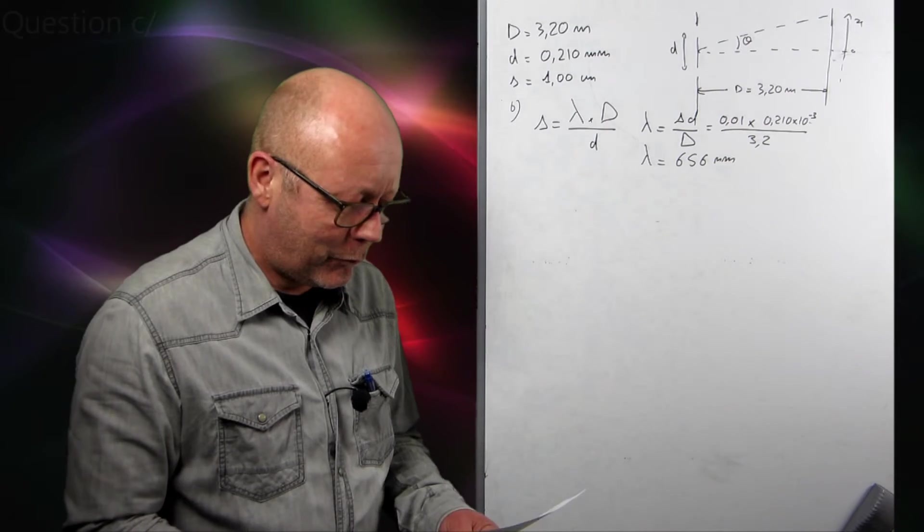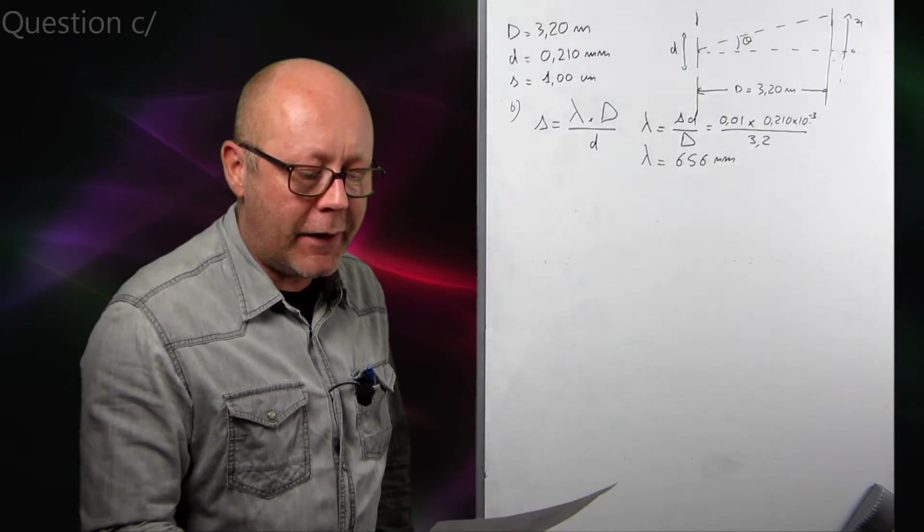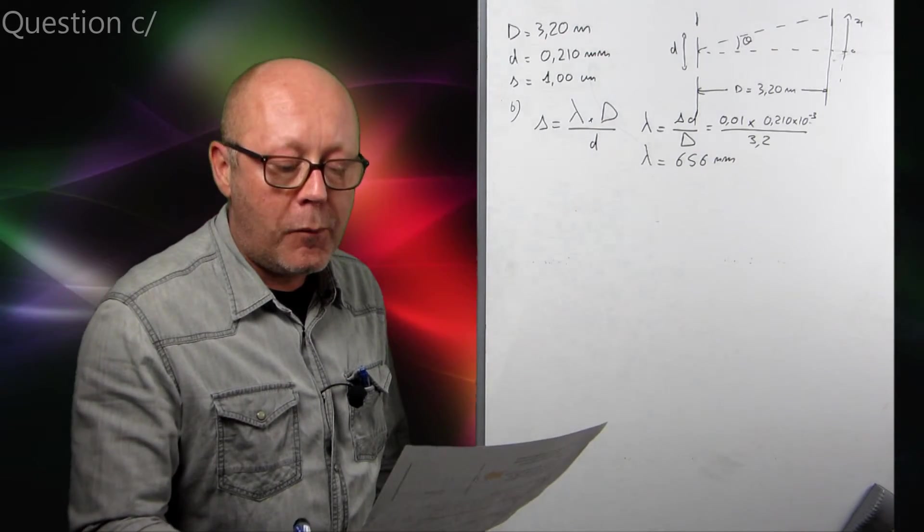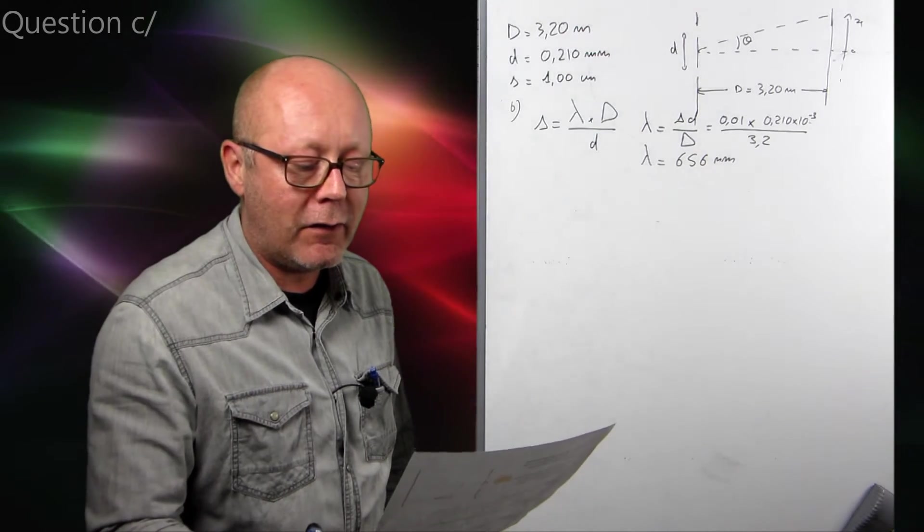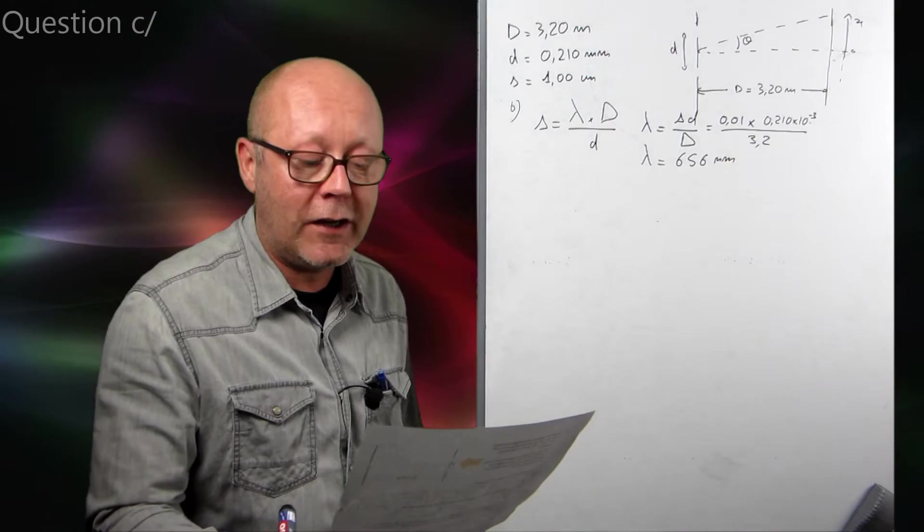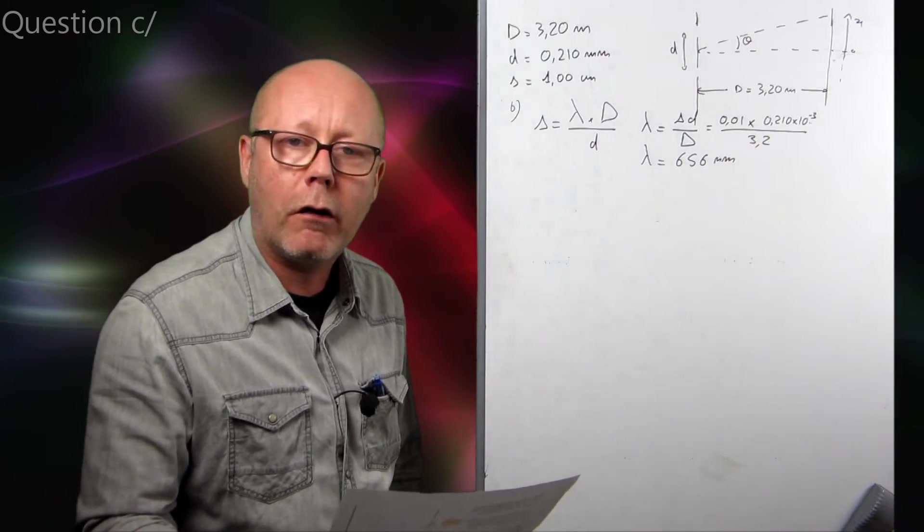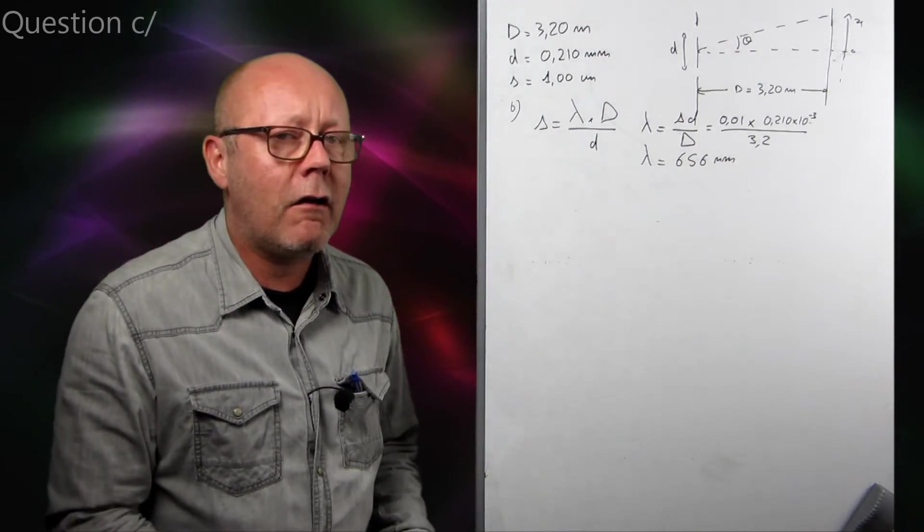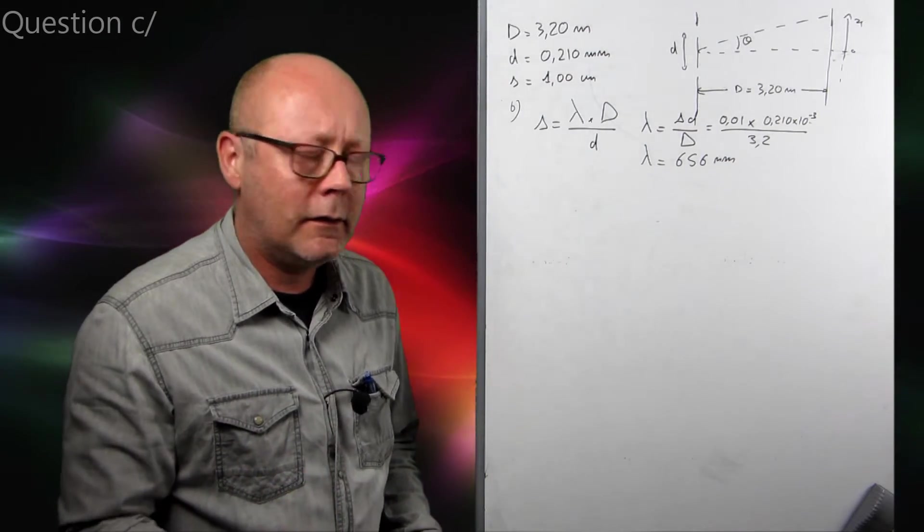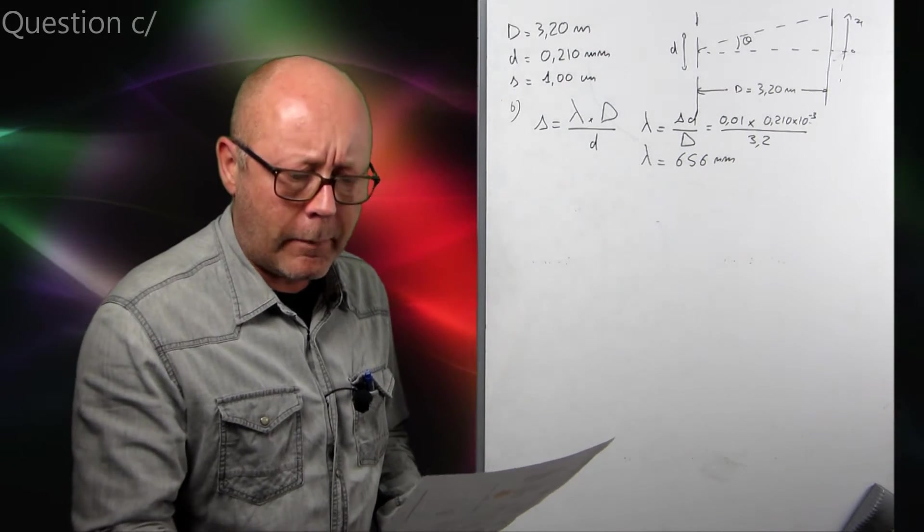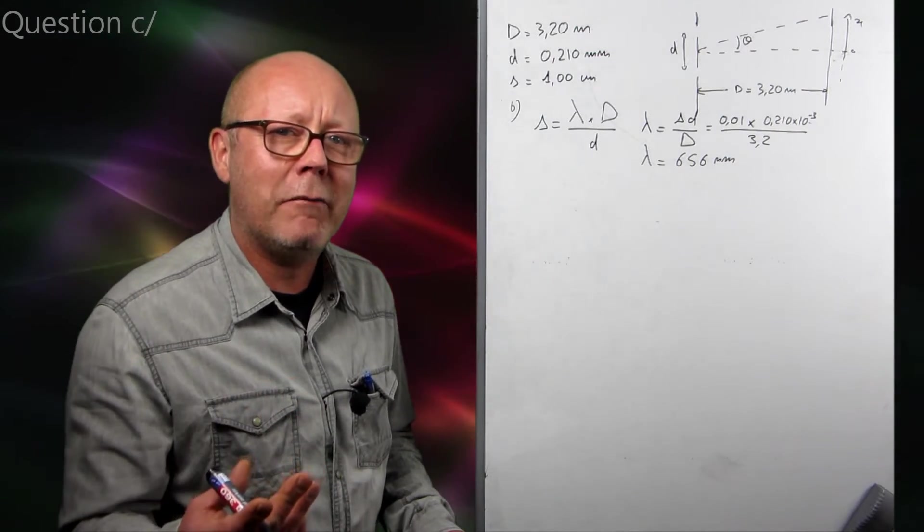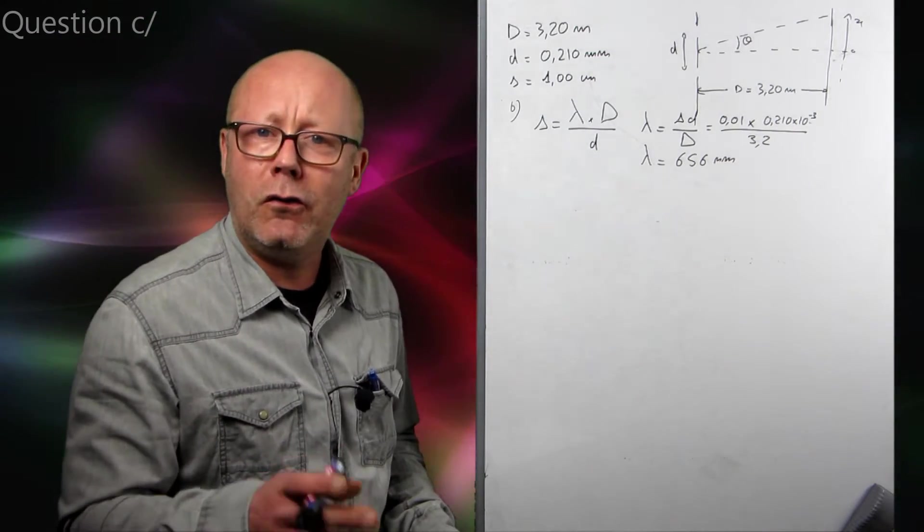Now, question C. The intensity of the light on the screen, due to one slit, is 15 watts per meter square. Plot on a graph how the intensity of the light passing through the two slits varies on the screen with the distance from the middle of the central fringe. Three marks. Three marks. So, it's not just a little sketch. It's going to be a bit more developed than that. Now, they give you a numerical value for the intensity, so you can guess from that that they will want you to scale up the axis.